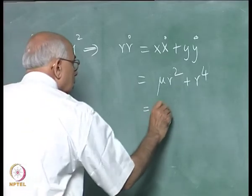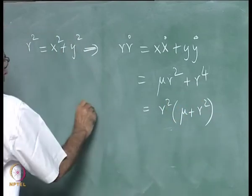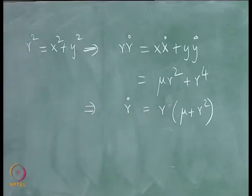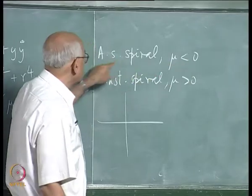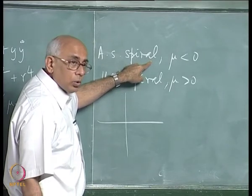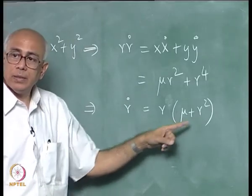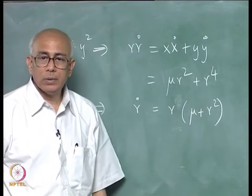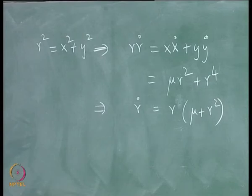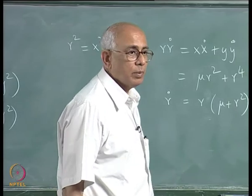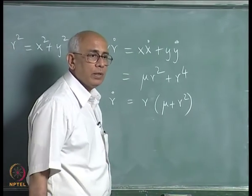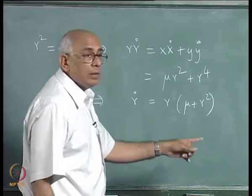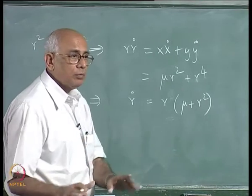Substituting in the equations of motion, multiplying the first equation by x and second by y and adding, we get r-dot equals r times mu plus r squared. This shows that for mu less than 0 there exists a trajectory corresponding to r equal to square root of minus mu on which r-dot equals 0, so the trajectory is a circle. For mu positive there is an unstable spiral and everything flows off to infinity. We need two different phase portraits: one for mu positive and one for mu negative.